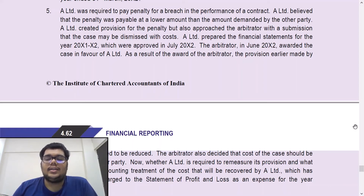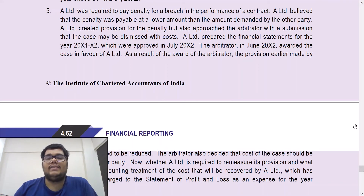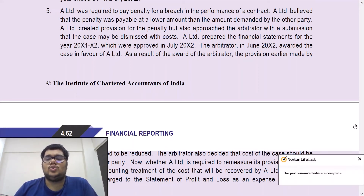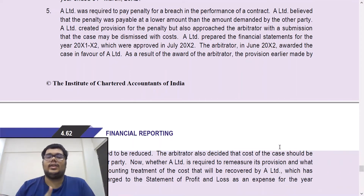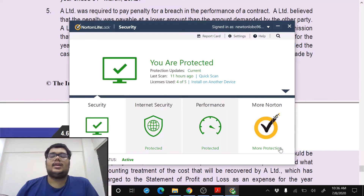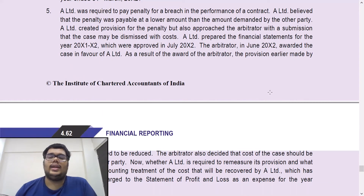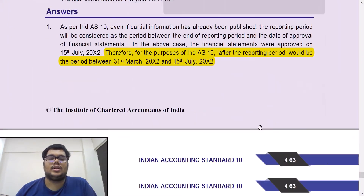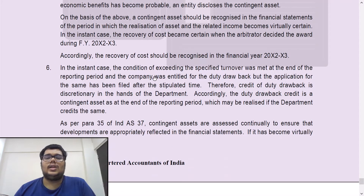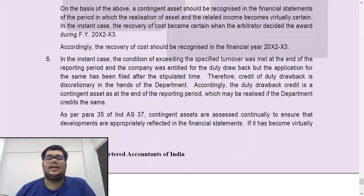Regarding the fact that the cost will now be recovered by A Limited from the other party — that would mean there is a contingent asset. But this is not giving us more evidence of conditions that existed as at year end in X1-X2. We did not know that we would get a contingent asset; this fact became known to us only in June X2. So it is not giving us more evidence of conditions that existed as at 31st March X2. Accordingly, we will recognize the contingent asset only in X2-X3. Answer: the contingent asset should be recognized in the period in which realization becomes virtually certain — that is, in financial year X2-X3.